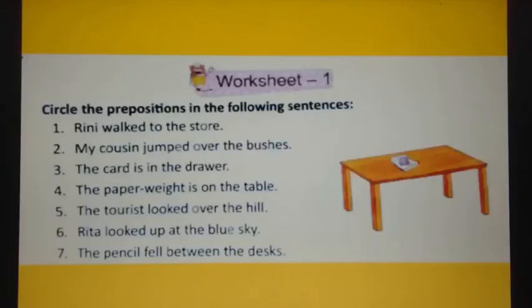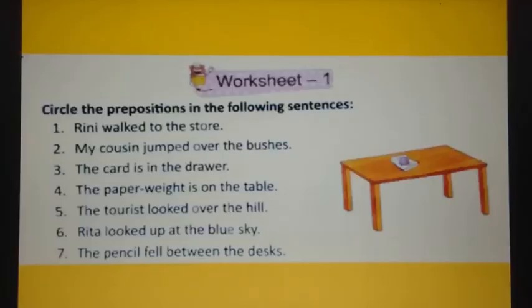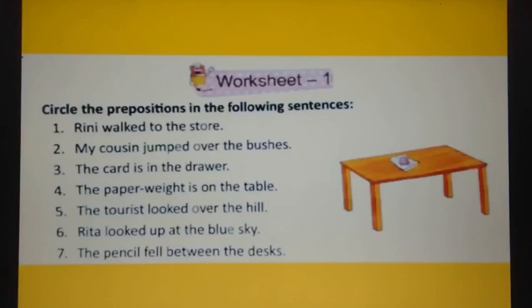Prepositions are clear to you, so we will do the exercise part. This is Worksheet 1 on page number 60 — circle the prepositions in the following sentences. Rini walked to the store — Rini का store के साथ relation कौन बना रहा है? To. तो 'to' को circle करेंगे क्योंकि 'to' preposition है. My cousin jumped over the buses — मेरे cousin ने buses के ऊपर से jump की. आप try करेंगे यहाँ preposition को circle करने के लिए.